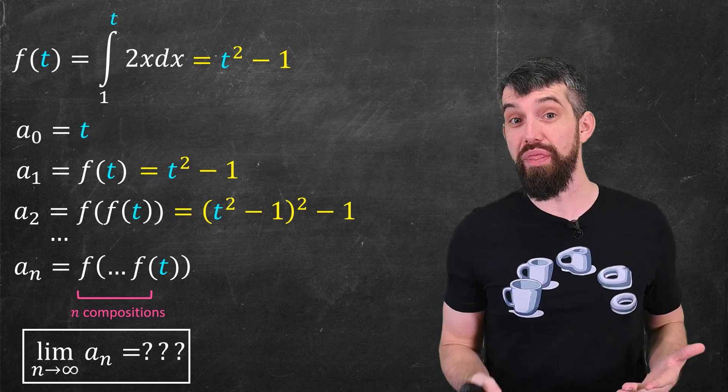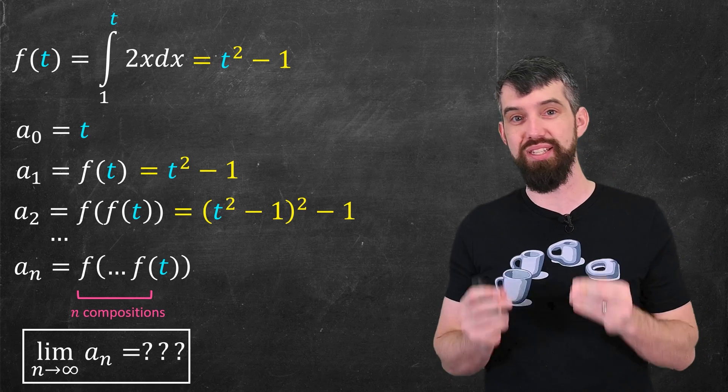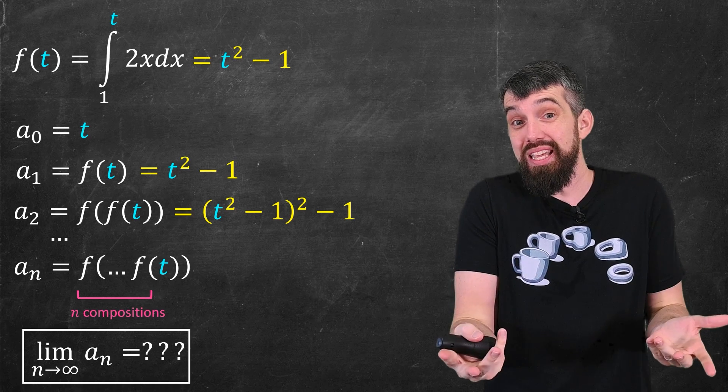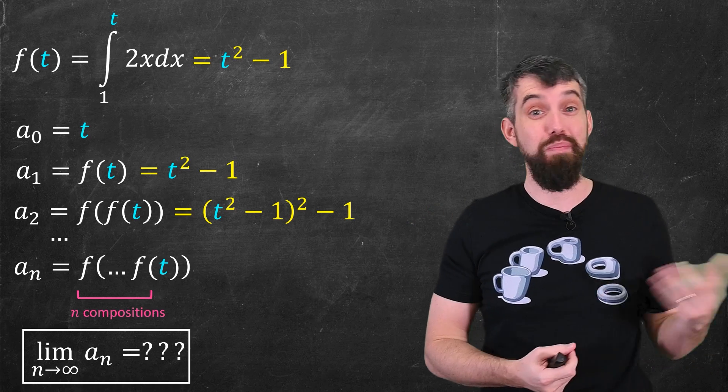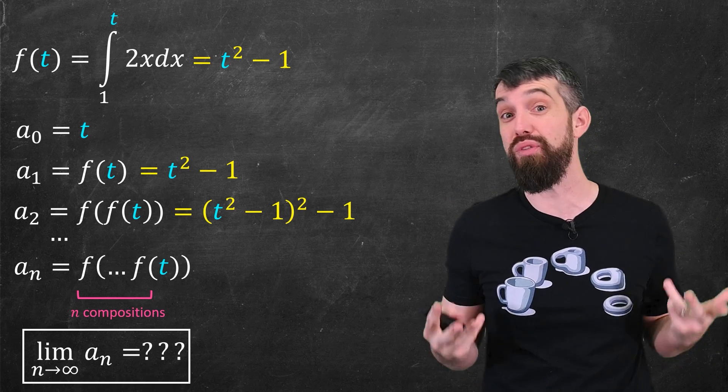And notice, this might not be one thing, because it depends on where I start. It depends on the a₀ equal to t. If you give me a different value of t, well, this sequence may or may not converge, or it might converge at different values. So what on earth is going on?